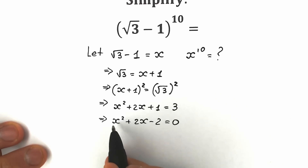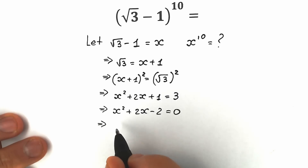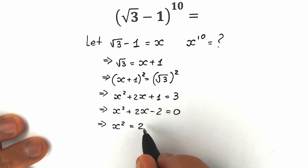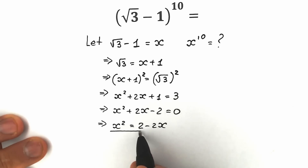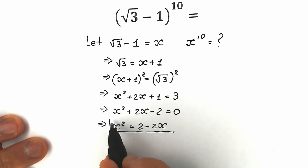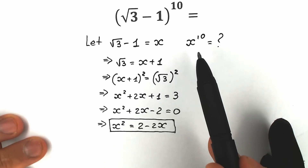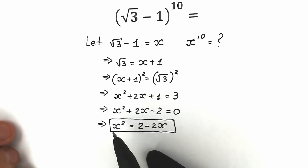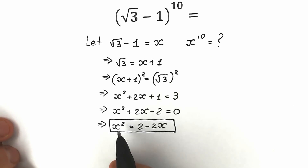I'm going to show a really great approach by reducing the power. We're going to express x squared through the first power. From x squared plus 2x minus 2 equals zero, we get x squared equal to 2 minus 2x. This is an extremely important expression because we need to find x to the tenth power, and now we know x squared.